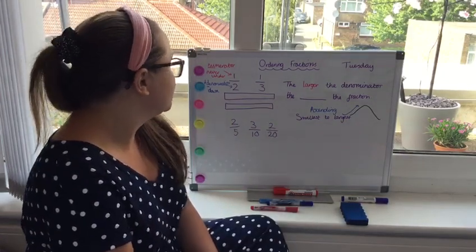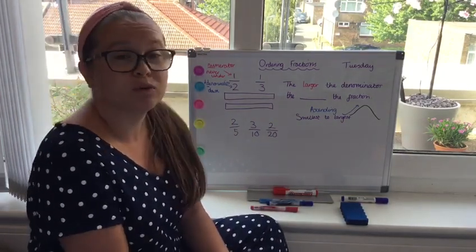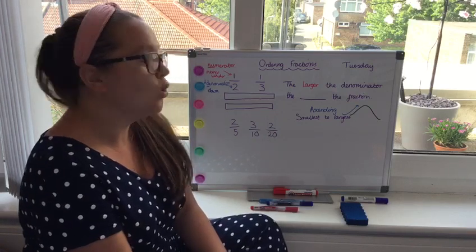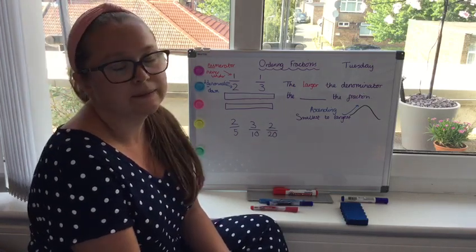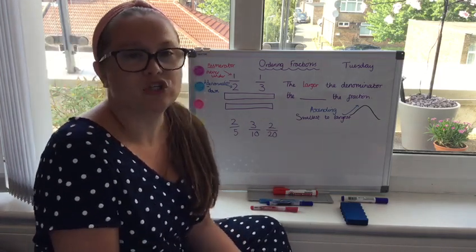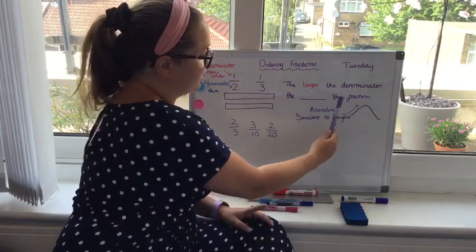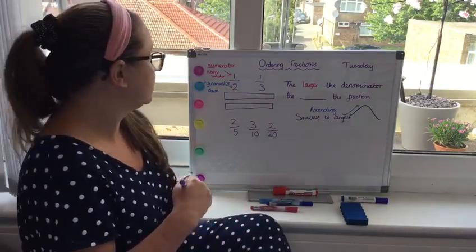So first of all we're going to have a little recap. In your starter activity you were asked whether you would prefer a half or a third of a cake. Now when you're thinking about this question you need to think, well the larger the denominator, the something, the fraction. That's what we need to find out with that question.